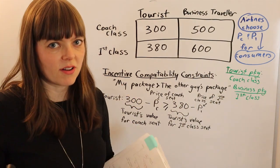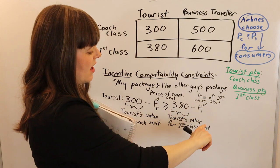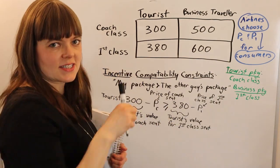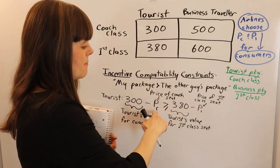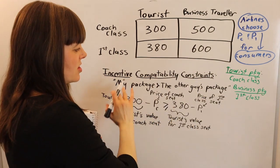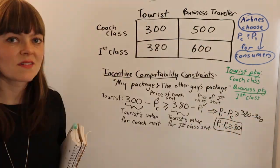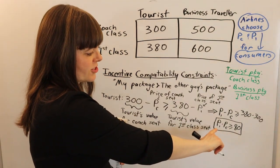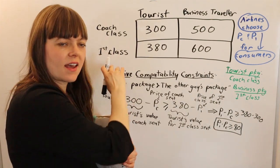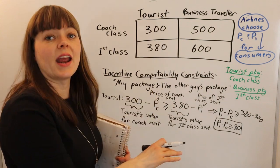We need to rearrange this inequality to actually price the tickets. We have two choice variables — price of coach and price of first class — and we want to get them on the same side to get a price differential. Since first class is probably going to be more expensive, we want P_first minus P_coach. Doing the algebra, we find that the price difference between first class and coach needs to be at least $80, or else tourists will switch up to first class, which is not what the airline wants.